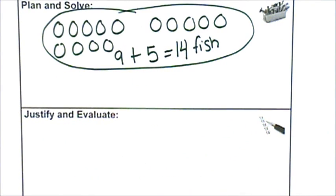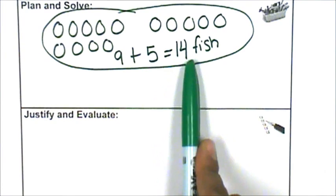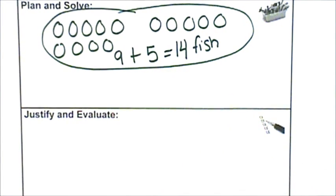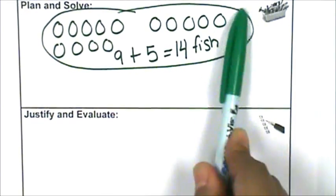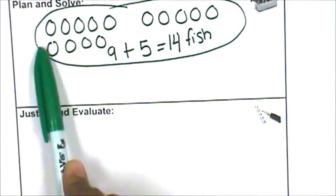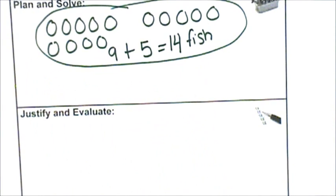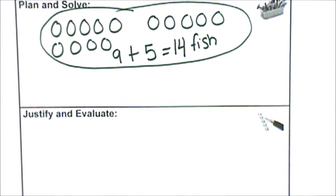Now, I'm going to justify and evaluate my answer. Does my solution answer the question? Is fourteen fish the right answer? Yes. Because I want to know the number of fish that are swimming. And these are all the fish that were swimming. And those were fourteen fish. I can check my answer on a double ten frame.